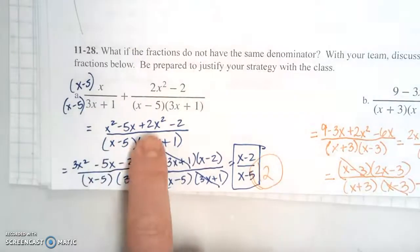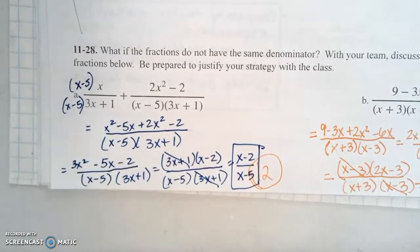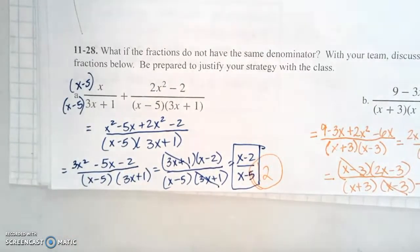We've got an x squared and 2x squared to make our 3x squareds. We have a minus 5x and a minus 2. Leave that denominator factored because now when we factor the numerator, we'll see if we have any factors that can cancel.